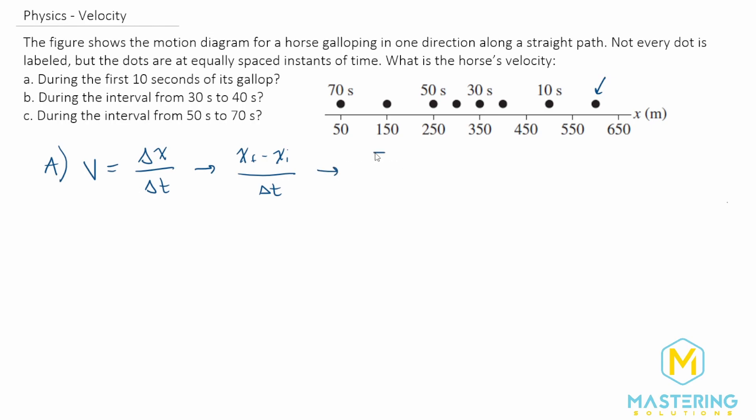When we plug in our numbers here, we have 500 meters minus 600 meters, which gives us negative 100 meters divided by our change in time, which is 10 seconds. So negative 100 divided by 10 is negative 10 meters per second.